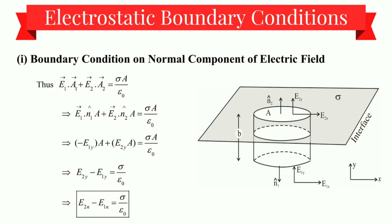Now we will consider only the y-components. Why? Because the x-component of the electric field does not contribute to the flux as it is parallel to the flat surface. We consider only the y-components, and since the unit vectors are in opposite directions, we take one of them with a negative sign. So we get: minus E₁y·a plus E₂y·a equals σa upon ε₀. Taking a out as common and cancelling, we get E₂y minus E₁y equals σ upon ε₀.